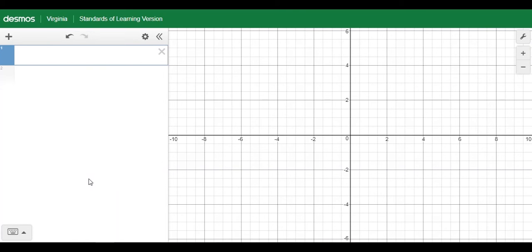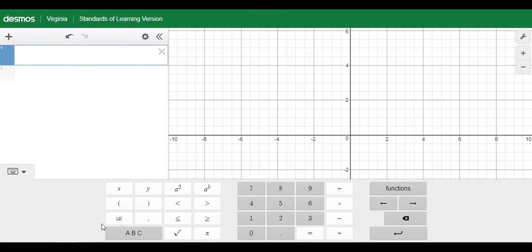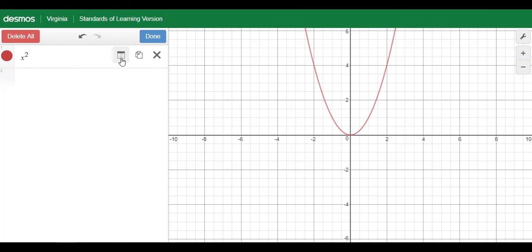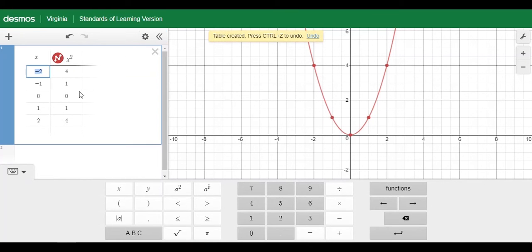If you prefer to use Desmos, type x squared. To get the table, click on the gear icon and then the table, and that will give you a few perfect squares.